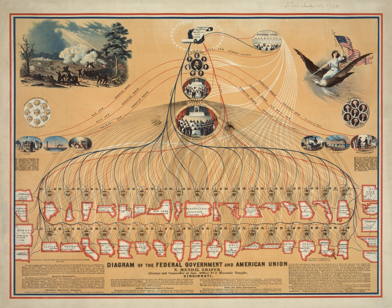The Constitution grants numerous powers to Congress, enumerated in Article 1, Section 8. These include the powers to levy and collect taxes, to coin money and regulate its value, provide for punishment for counterfeiting, establish post offices and roads, issue patents, create federal courts inferior to the Supreme Court, combat piracies and felonies, declare war, raise and support armies, provide and maintain a navy, make rules for the regulation of land and naval forces, provide for, arm and discipline the militia, exercise exclusive legislation in the District of Columbia, and to make laws necessary to properly execute powers.